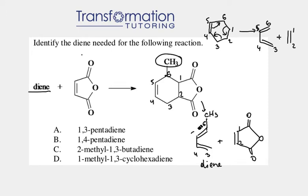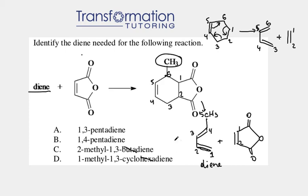All that's left is to name the diene correctly. I'll erase my numbers and rename it. To name it, I number from the end of the chain closest to the first double bond. Starting from that end: 1, 2, 3, 4, and 5. I have 5 carbons, so the parent chain prefix is 'pent.' My first double bond starts on carbon 1 and my second double bond starts on carbon 3, so the correct answer is 1,3-pentadiene.